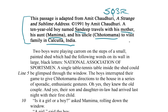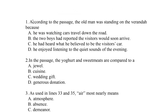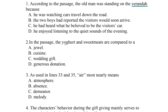Let's move over to the questions. Question one: according to the passage, the old man was standing on the veranda because... For this, I'm going to underline 'veranda.' Then later, as we're going through the passage, when we come across the veranda, we'll just circle it. This is just asking us why the old man was standing on the veranda.